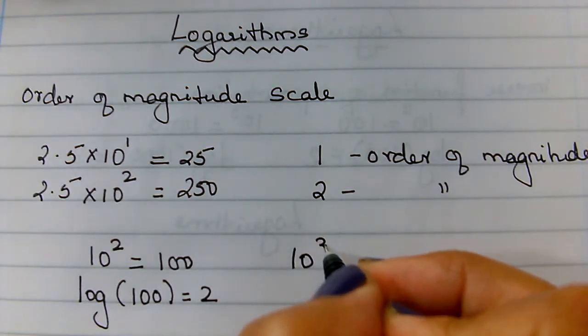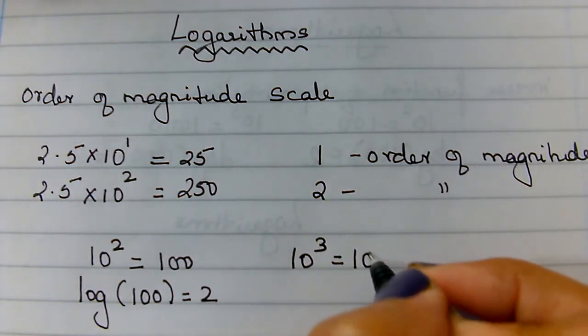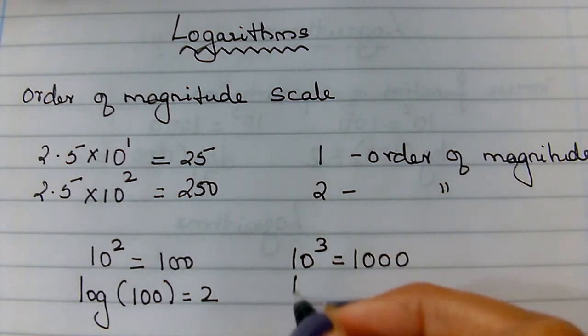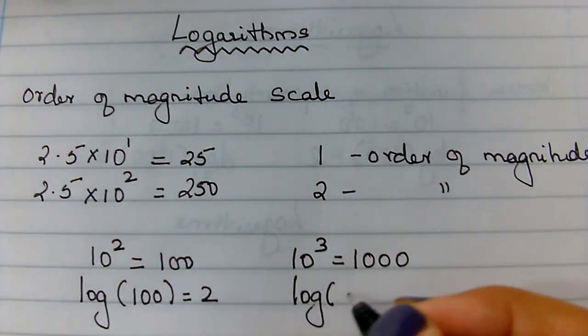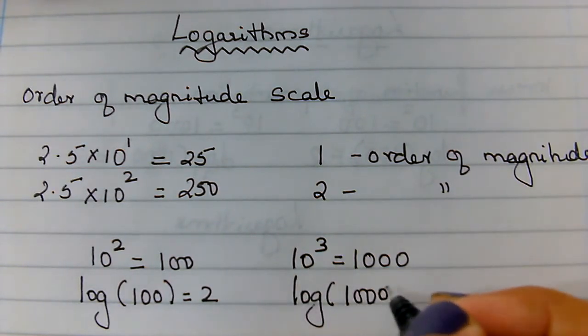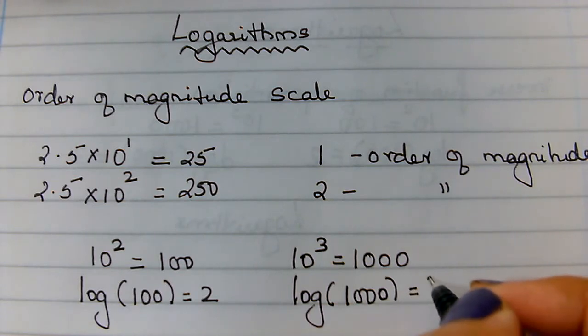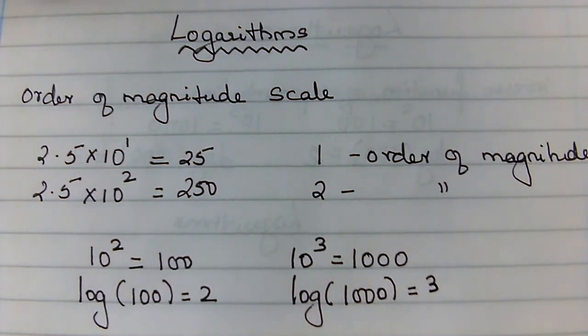Similarly, if you go for 10 to the power 3, which is 1000, and if you take log of 1000, it will give you the answer as 3. So basically, it is giving you the order of magnitude. The logarithm of a number converts the number to its order of magnitude.